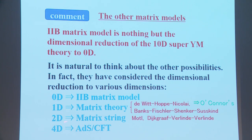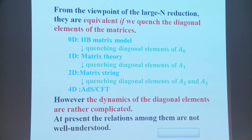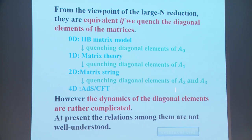From the viewpoint of large-N reduction, these are equivalent if we quench the diagonal elements of the matrices. Starting from the 2B matrix model, if we quench the diagonal elements of A0, we have one-dimensional matrix theory; if we also quench A1, we have two-dimensional matrix theory; and if we quench A2 and A3 as well, we have AdS/CFT. However, the dynamics of the diagonal elements are very complicated, and at present we do not know the exact relation.